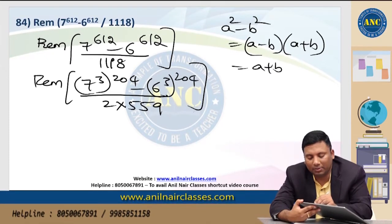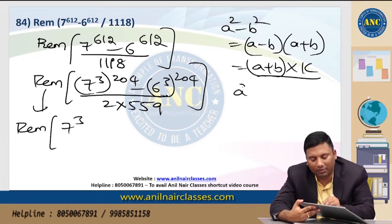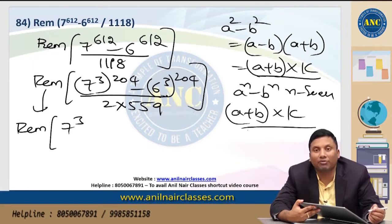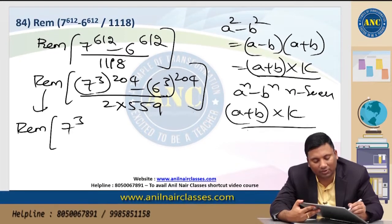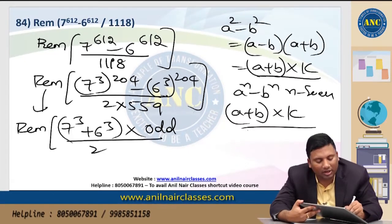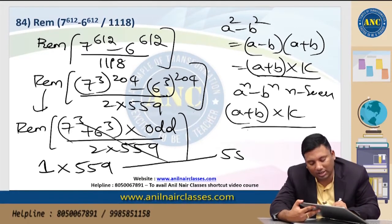In other words, a square minus b square can also be written as (a + b) into some value. For a^n minus b^n, if n is an even number, it is divisible by (a + b). So for a^4 - b^4 or a^6 - b^6, we get 7 cube plus 6 cube into (7 cube minus 6 cube). Since odd minus even is odd, and odd plus even is odd, we get an odd number divided by 2 × 5159, and after cancellation, odd divided by 2 gives 1.